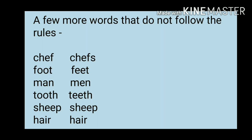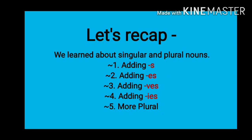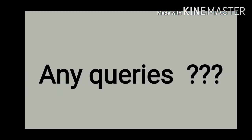Did you all understand, children? Let's recap. We learnt about singular and plural nouns, and we learnt about the five different kinds of plural nouns — adding S, adding ES, adding VES, adding IES, and some irregular plurals. I hope all of you understood. If you have any queries, do ask me in class. Thank you so much.